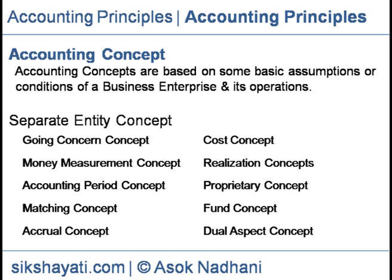Money Measurement Concept: Under this concept, only cash transactions are recorded in the books of accounts. Here, money is accepted as a unit of account. Transactions which cannot be expressed in monetary values are not entered in accounting records. Example: The value of a worker cannot be expressed in terms of money though they are an integrated part of production. So, their values are not taken in account books.